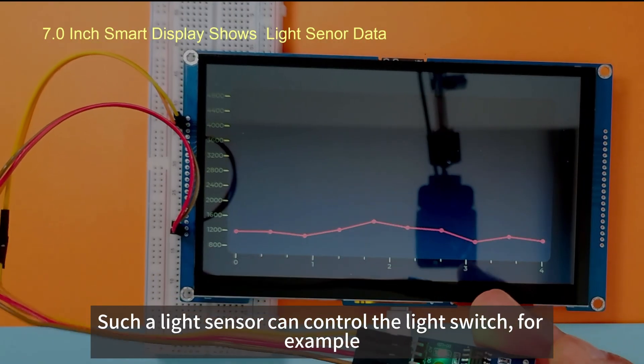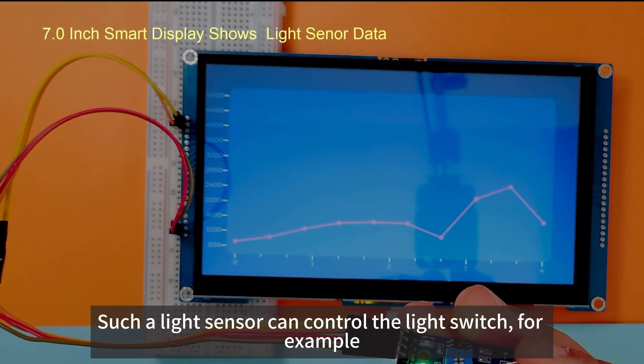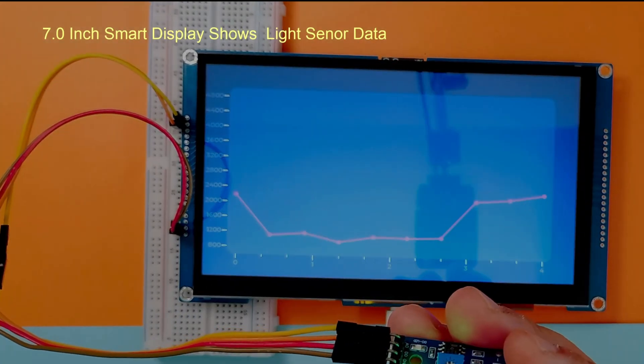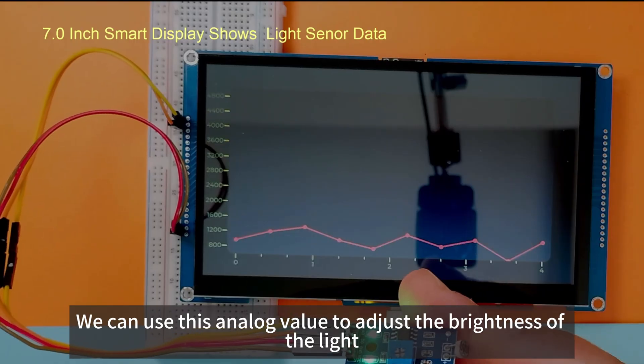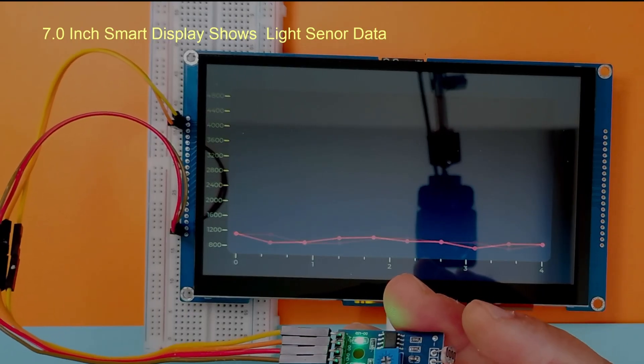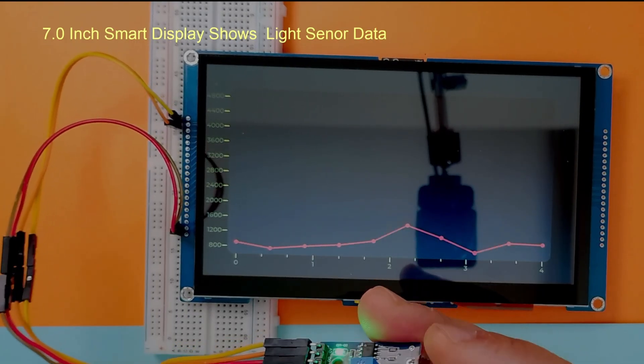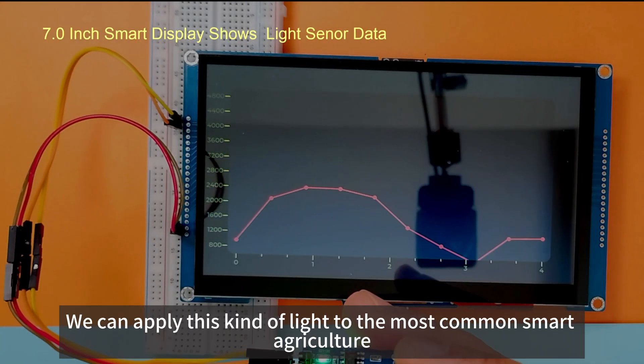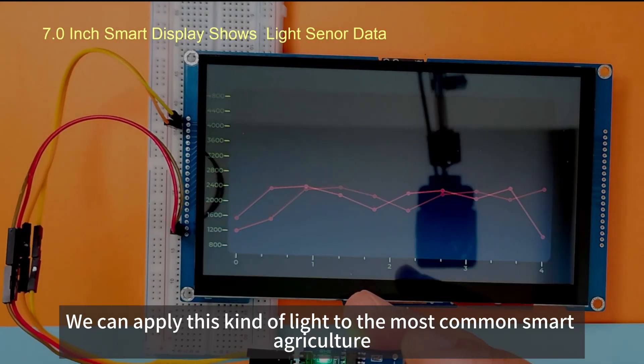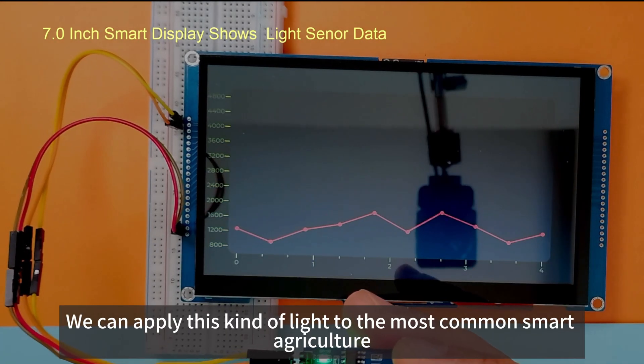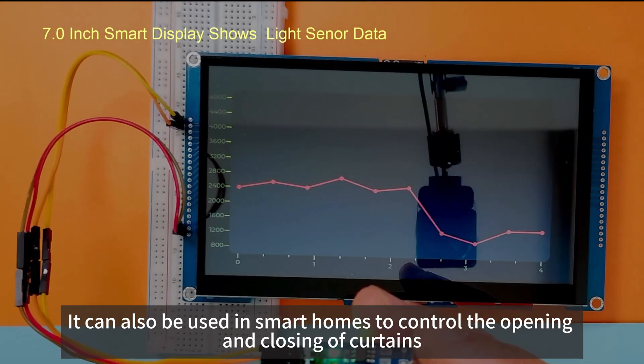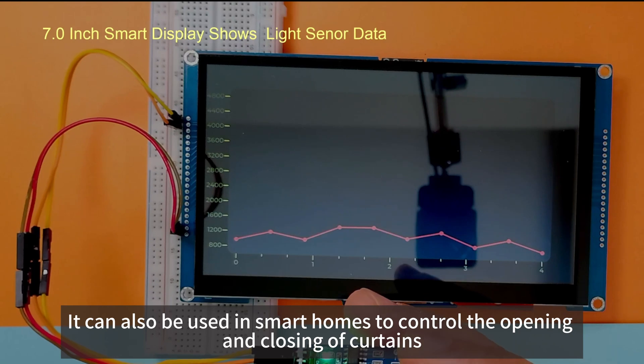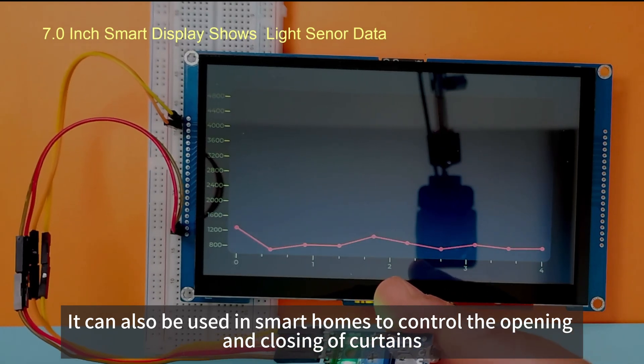Such a light sensor can control the light switch, for example. We can use this analog value to adjust the brightness of the light. We can apply this kind of light to the most common smart agriculture.